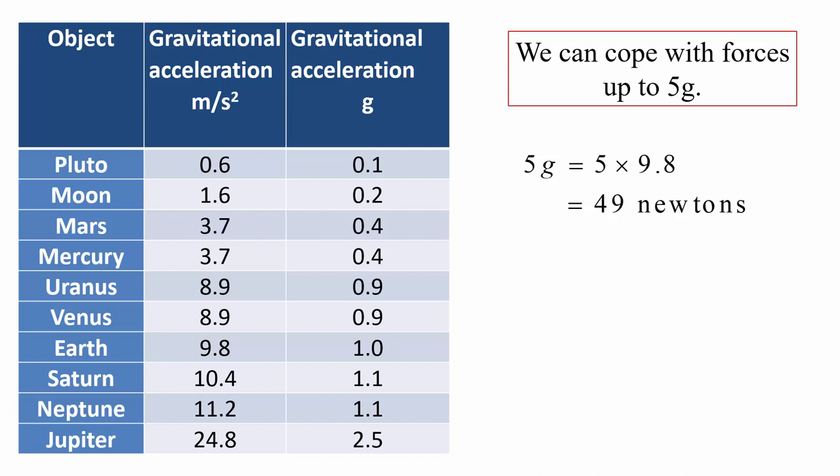Other interesting ones there, Jupiter, 2.5 G. That means you would experience 2.5 times the G forces that we experience here on Earth, or, if you're on the surface of Pluto, 0.1 G. Very slight force.